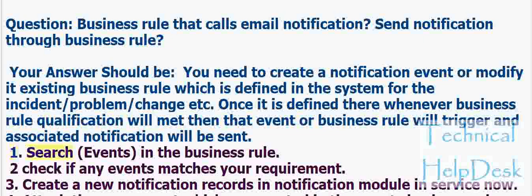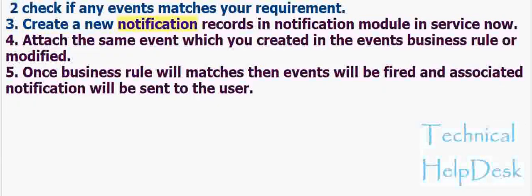The steps are: 1. Search in the business rule. 2. Check if any events match your requirement. 3. Create a new notification record in the Notification module in ServiceNow. 4. Attach the same event which you created in the events business rule or modified. 5. Once the business rule condition matches, the event will be fired and the associated notification will be sent to the user.